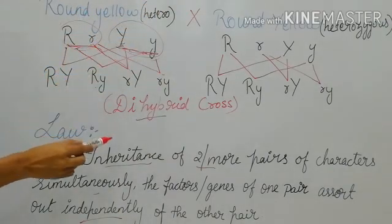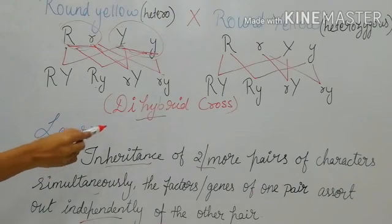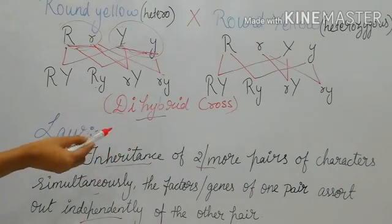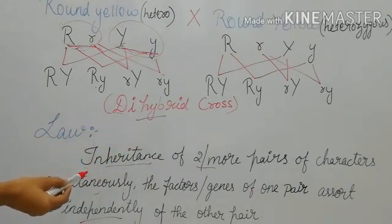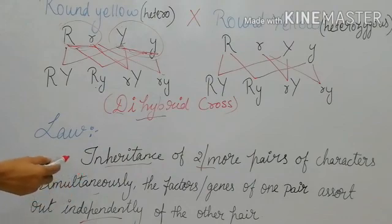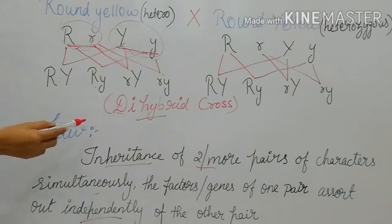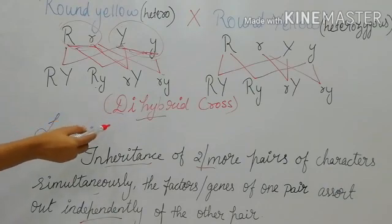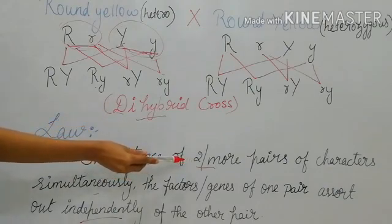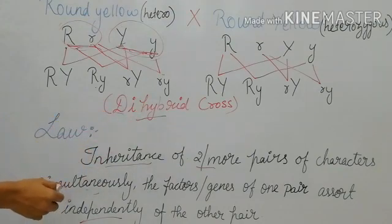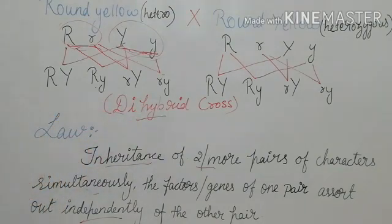This law is applicable only for dihybrid and trihybrid crosses and cannot be used for monohybrid, because in monohybrid only one character is involved in crossing. In dihybrid and trihybrid, two or more pairs of characters are crossed at the same time. These are all Mendel's laws.